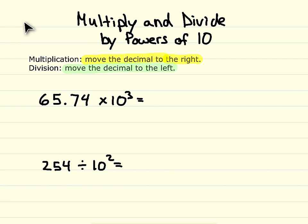Let's first do a multiplication problem. With multiplication, we need to move the decimal to the right, and since we're multiplying by 10 to the third power, we're really multiplying by 1000, so we need to move the decimal to the right three spots. Originally we have 65 and 74 hundredths, and we need to move the decimal to the right three spots because we have 10 to the third power.